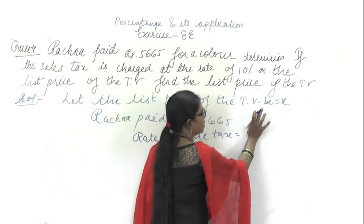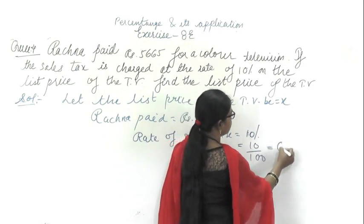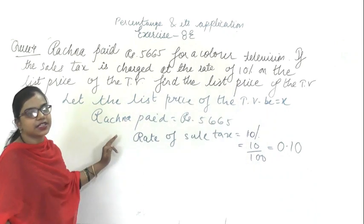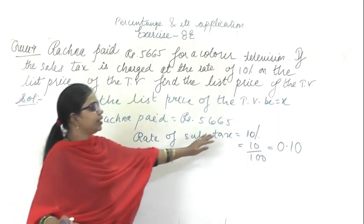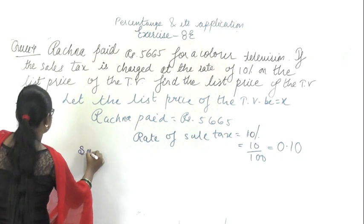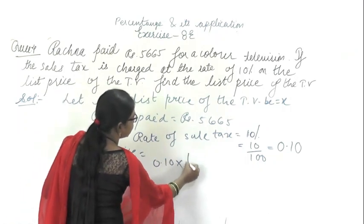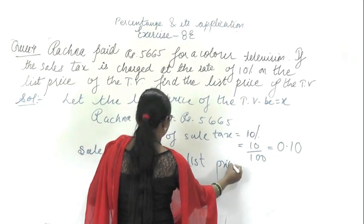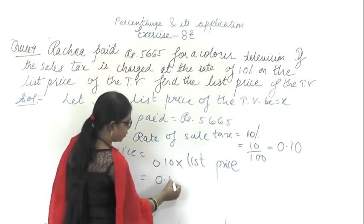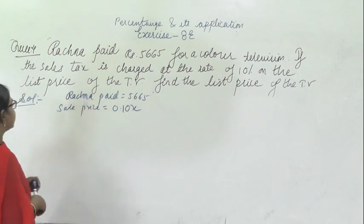10% in decimal form is 0.10. So the sale price (tax amount) is 0.10 × X, that is 0.10X. The total amount Rajna paid for the television is the sale price plus the list price.